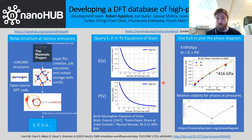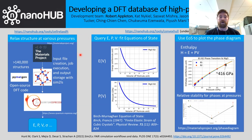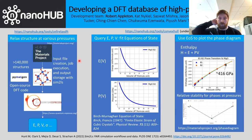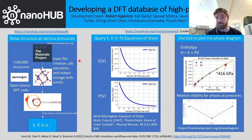This is one aspect of how we can use the DFT data that's being generated. We have plans this summer to use some undergrad researchers to start thinking about other ways that we can explore this data that's being stored. All of these tools are open access — all you need is a nanoHUB account, which is free, and an internet connection.